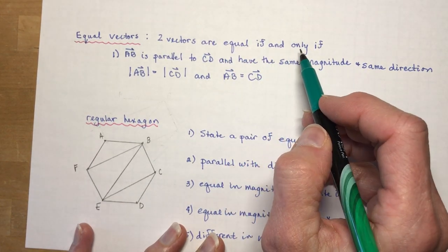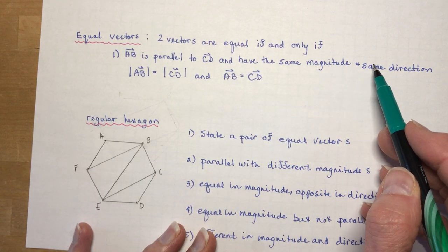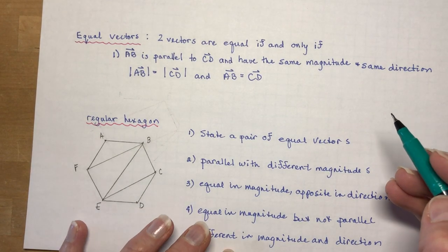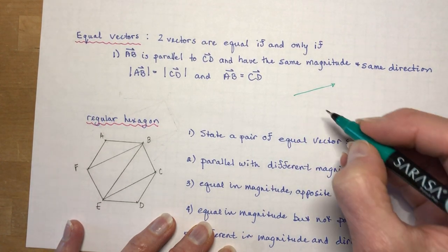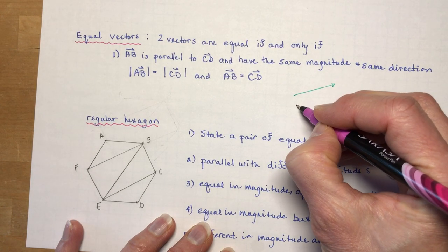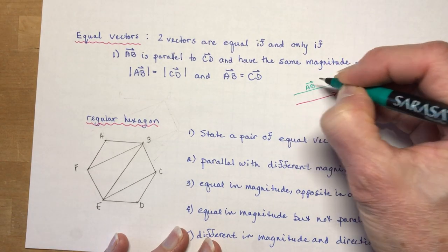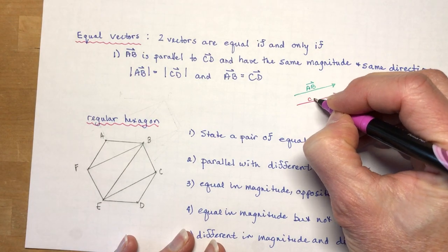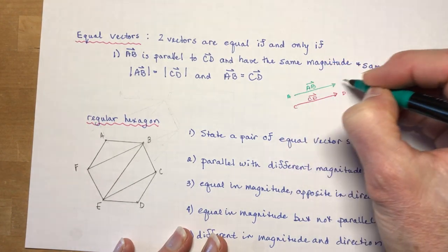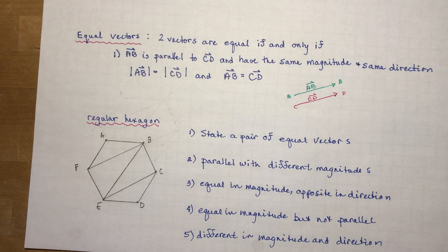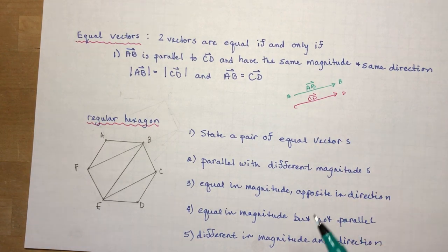So equal vectors are vectors, they're equal if and only if AB is parallel to CD and they have the same magnitude and the same direction. That kind of makes sense, doesn't it? So if I had a vector going like this and I had another vector here, so let's say this is vector AB and this is vector CD. So it would have to go from C to D as well, and this one has to go from A to B. So these would be equal because they have the same direction, they have the same magnitude, and they're parallel.